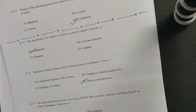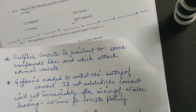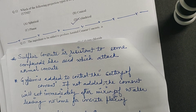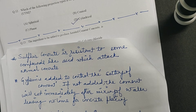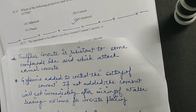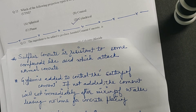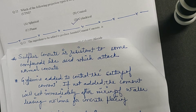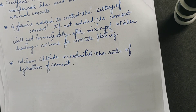The other three materials: sulfur is added to concrete to make it resistant to compounds like acid attacks. Gypsum is added to control the setting time of cement — without it, cement would set immediately after water is added, leaving no time for concrete placing. Calcium chloride is added to increase the hydration rate of cement.